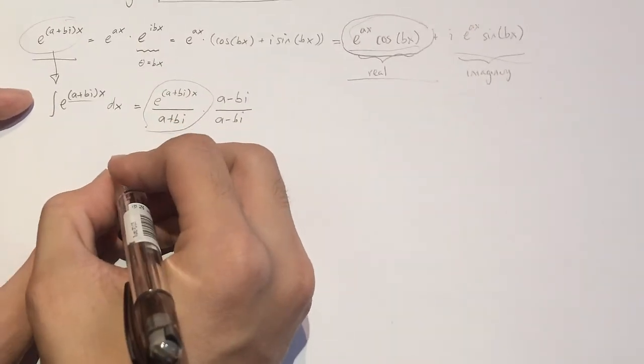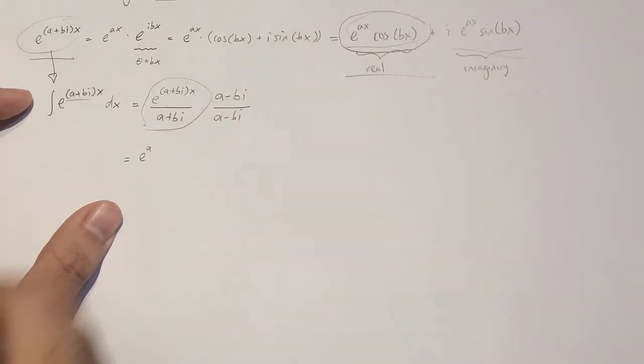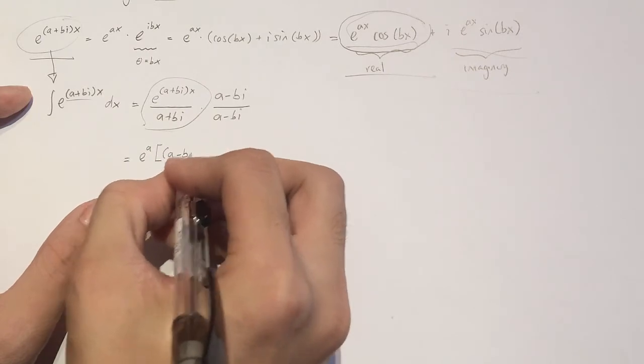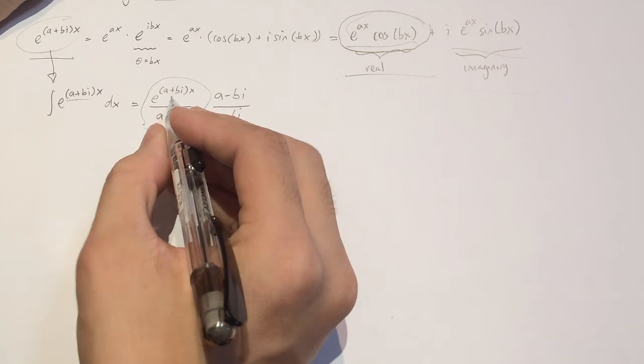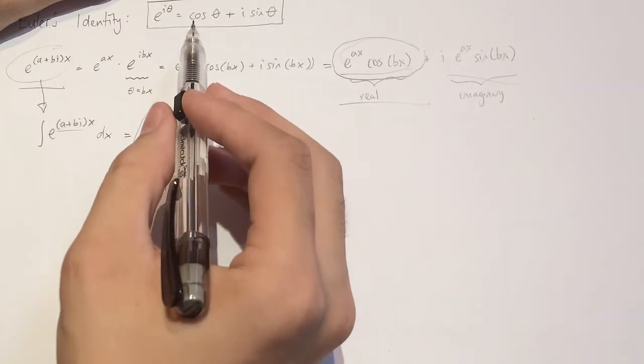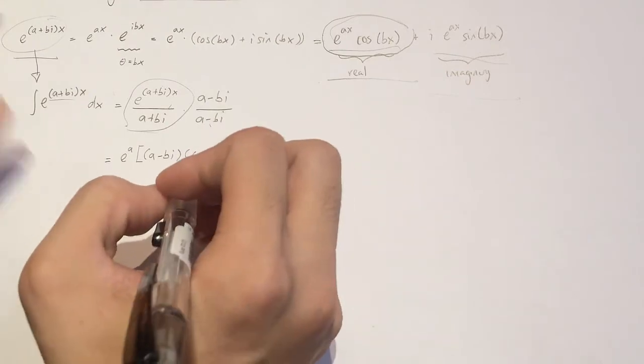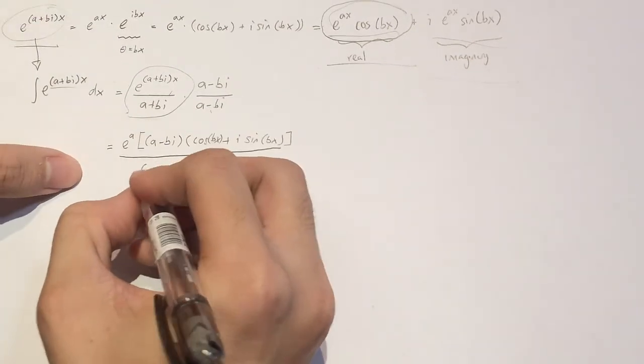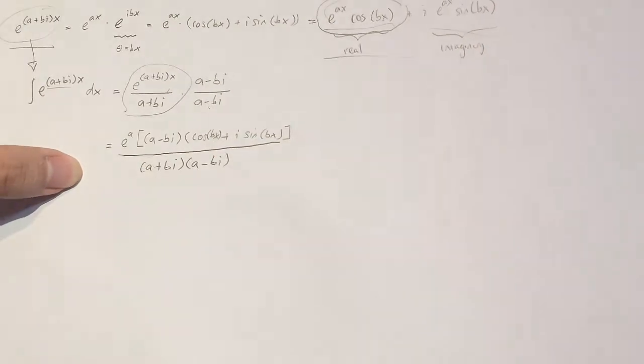So what this becomes is it becomes the following. It becomes e to the power of ax, which I'll take outside, multiplied by a minus bi. And because here we're going to have e to the power of ibx again, which I'll use Euler's identity that we have earlier. I'm just going to put that in. And then the bottom we will have a plus bi times a minus bi, like that.